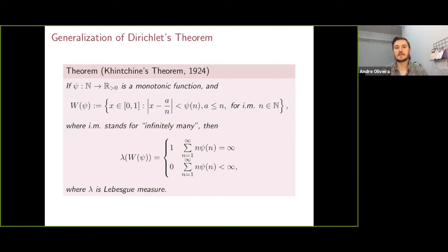As a sanity check, if we take psi to be 1 over n squared, we see that this series is going to diverge and we get a full measure statement similar to Dirichlet's theorem.